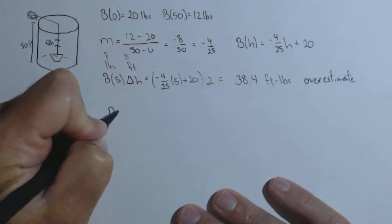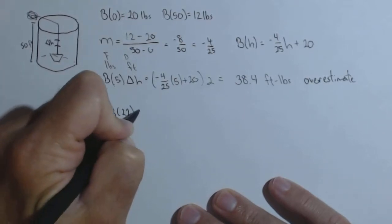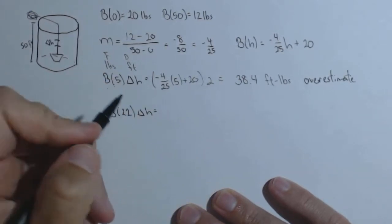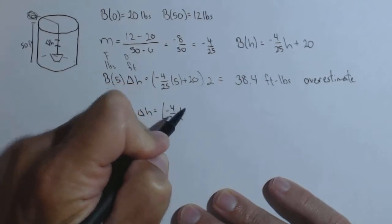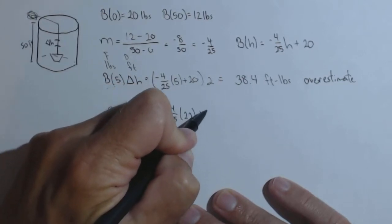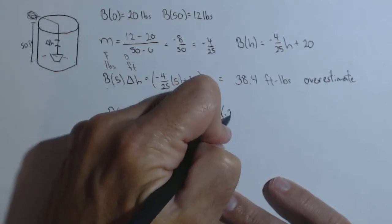We can do it on a smaller interval, because what that will do is that will give us a better estimate. So we're going to do B(22) times the delta h, and this time we'll use a delta h of .25. So we have negative 4 over 25 times 22 plus 20 times .25.